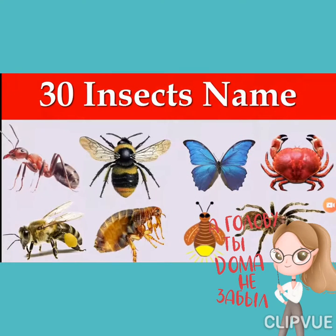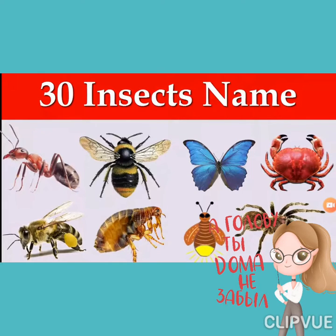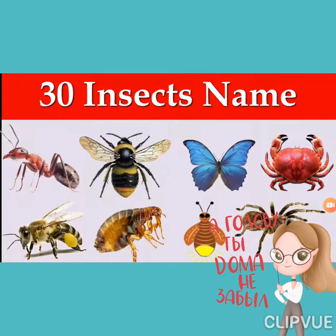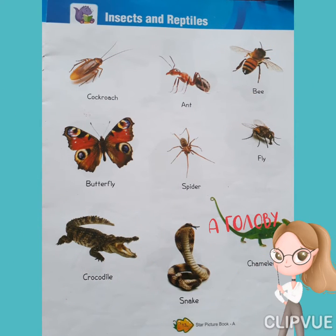Hello everyone, today we are going to learn insects and reptiles. Insects and reptiles means kide mukode and sarishrip. Let's read in Hindi and English — repeat after me.